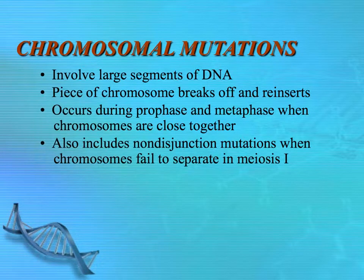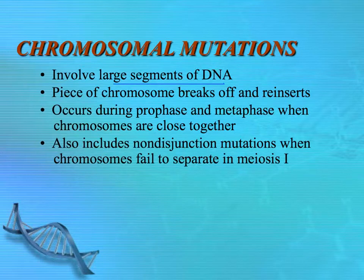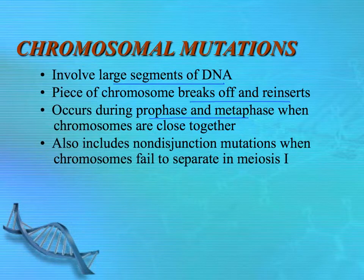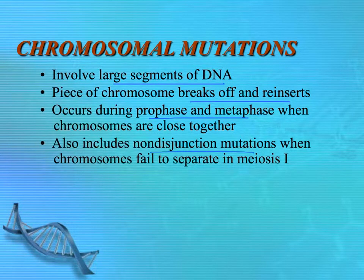Point mutations concern just one base — changing, adding, or removing one base — but in chromosomal mutations, large segments of DNA are involved. Pieces of the chromosome actually break off and reinsert somewhere. This tends to occur during prophase or metaphase when chromosomes are normally close together. Sometimes we get mixing up of chromosomes called crossing over, and if you're just swapping equal pieces from one to the other it won't cause a mutation, but unequal sharing is when problems arise. Also part of chromosomal mutations are non-disjunction mutations, where chromosomes fail to separate during meiosis I, so one gamete ends up with too many copies of a chromosome and the other not enough.